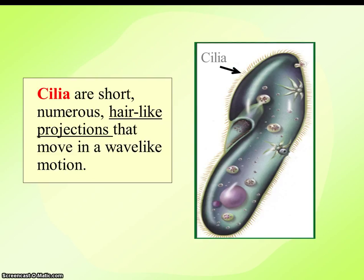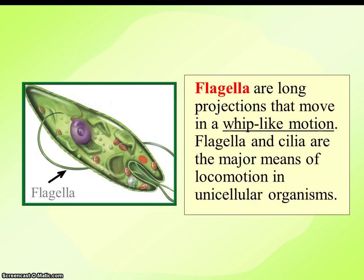As far as movement goes for cells, cilia — these little hair-like projections that move in wave-like patterns — are going to be used for motion. Other cells can have little tails called flagella that also aid in motion.